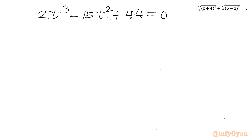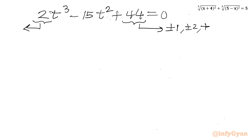Now this is a cubic equation. We will use the rational root theorem. I need to find eligible factors of the constant term and the leading term. For 44, the factors are plus or minus 1, 2, 4, 11, 22, 44. And factors of the leading coefficient 2 are plus or minus 1 and plus or minus 2.